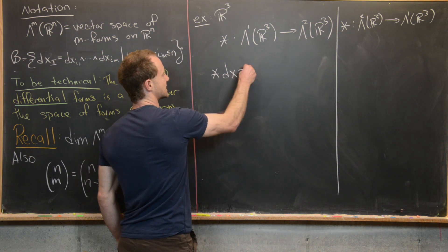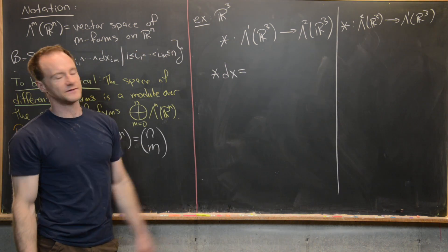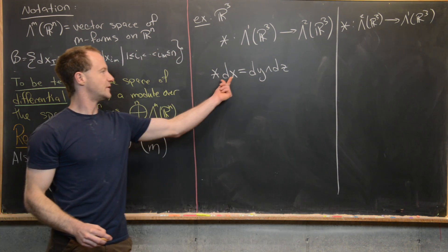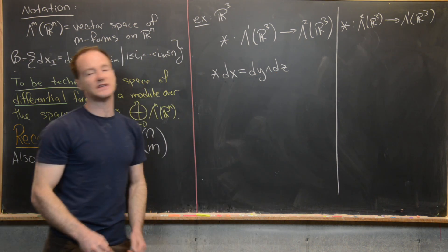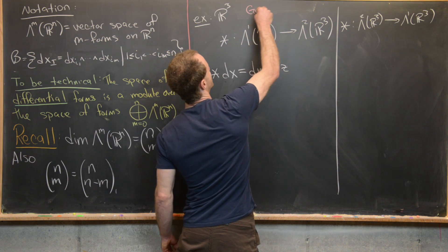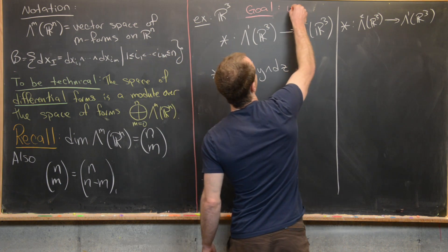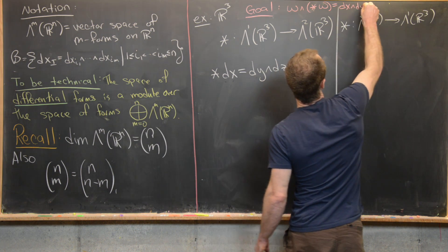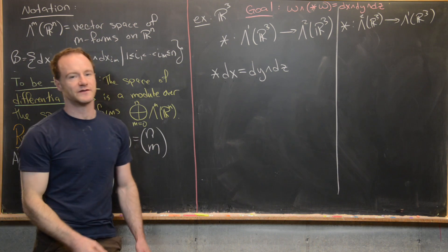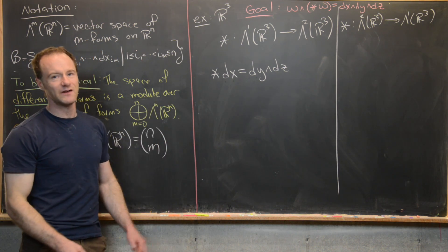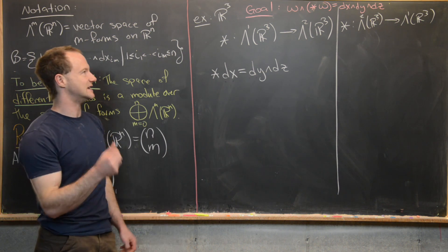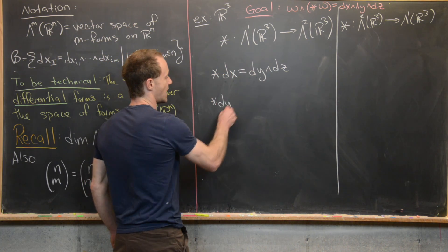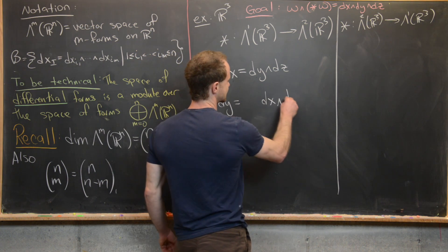The space of one forms on R³ is spanned by dx, dy, and dz. For star(dx), it needs to involve dy and dz, and in fact it's just dy wedge dz, because dx wedge dy wedge dz gives exactly what we want. Let's remind ourselves of our goal: if we take an m-form omega and wedge it with star(omega), we should get dx wedge dy wedge dz. That's the defining property of the Hodge operator. In general on R^N we'd have dx_1 wedge dx_2 up to dx_N.